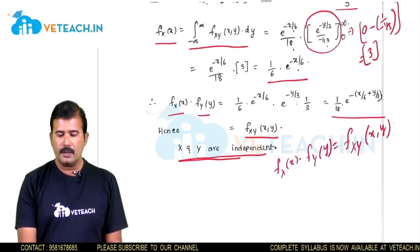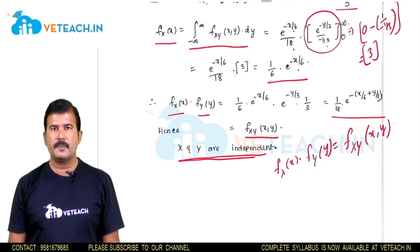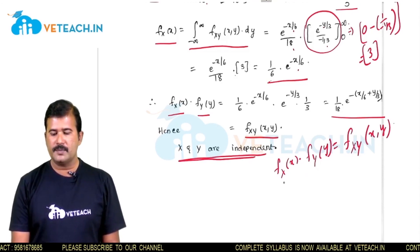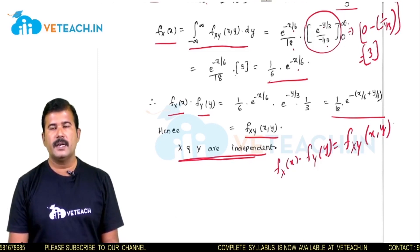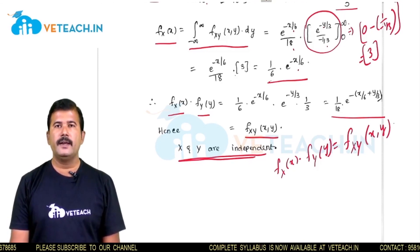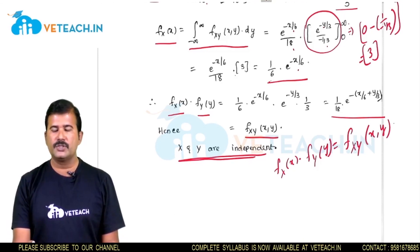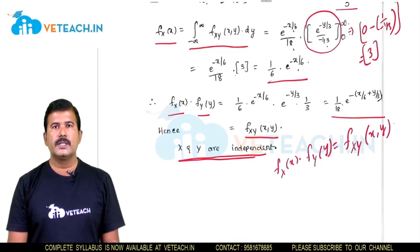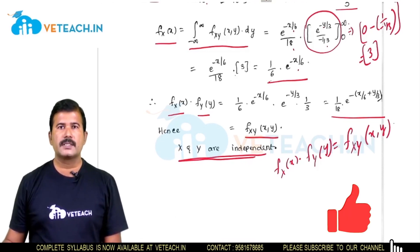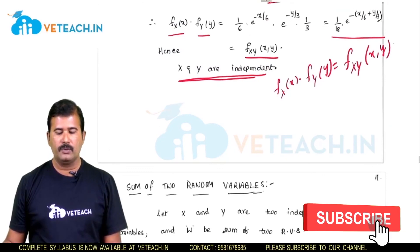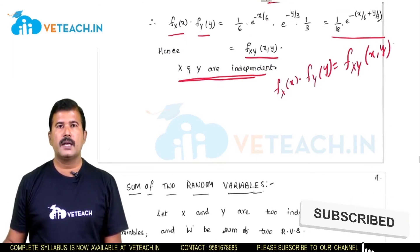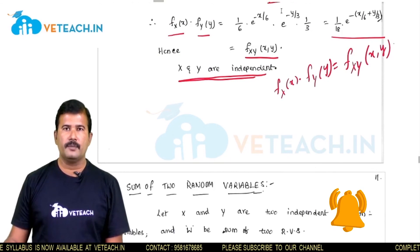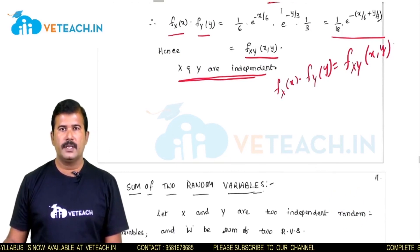If you observe previous exam papers, most of the time only two types of problems are given: checking independence and checking the validity of the density function. In the next class I will discuss about the sum of two random variables and the central limit theorem, which is related to the sum of several random variables. Thank you.